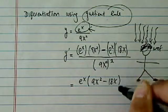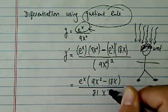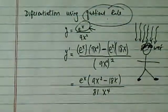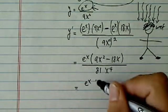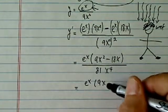Minus 18x over here. And then this is 81x to the fourth. Maybe one more step. We can pull the x out and cancel it out. So make it look as pretty as we can manage it.